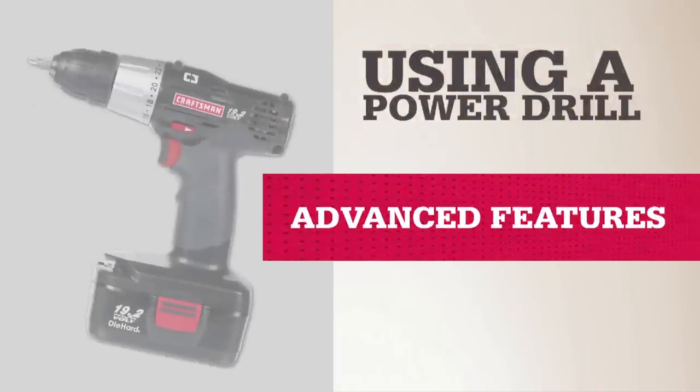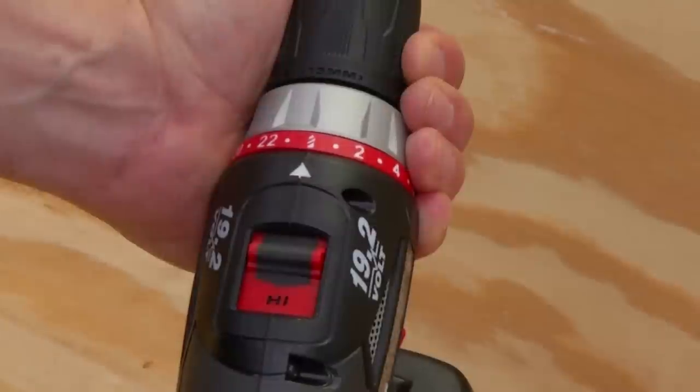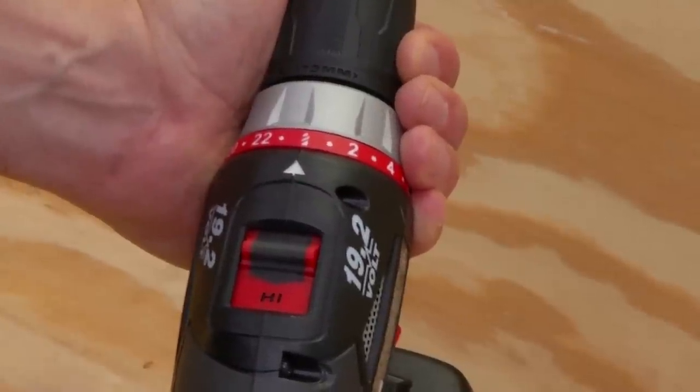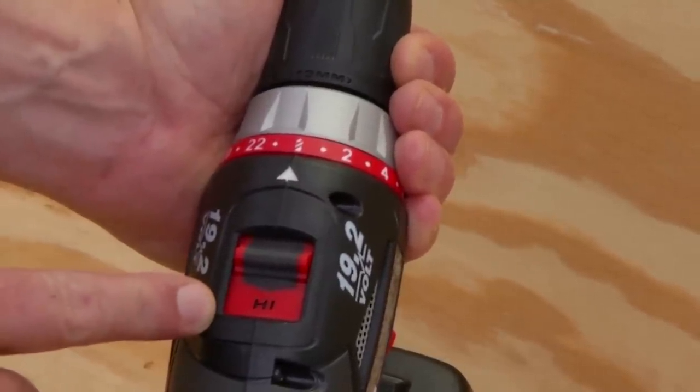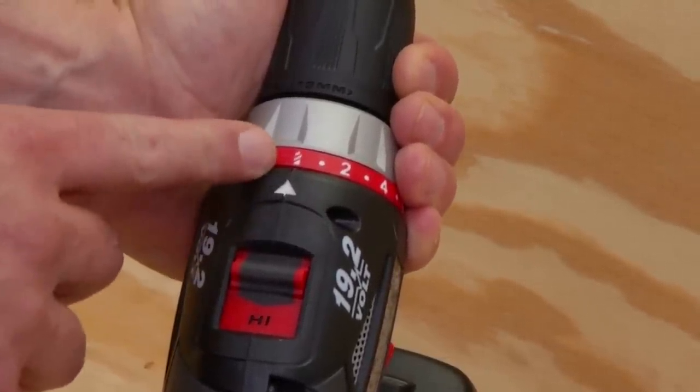Here's how to use some of the additional features on high-quality drills. The barrel of the drill may have a lower high-speed gear setting and a numbered dial or clutch behind the chuck to adjust the torque or twisting power. When drilling holes, set the speed switch to high and the clutch in the drilling position, usually indicated with an icon of a drill bit.